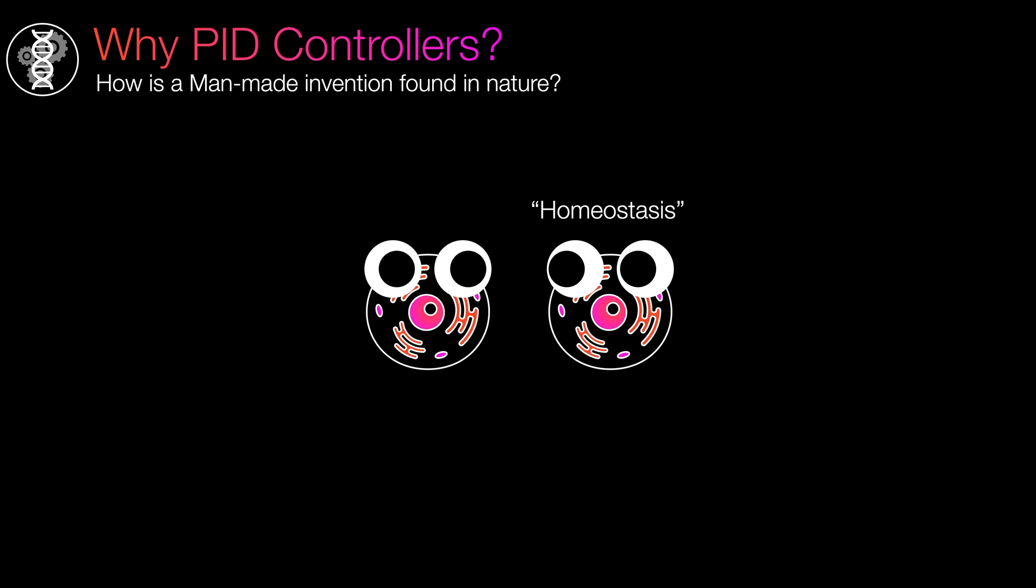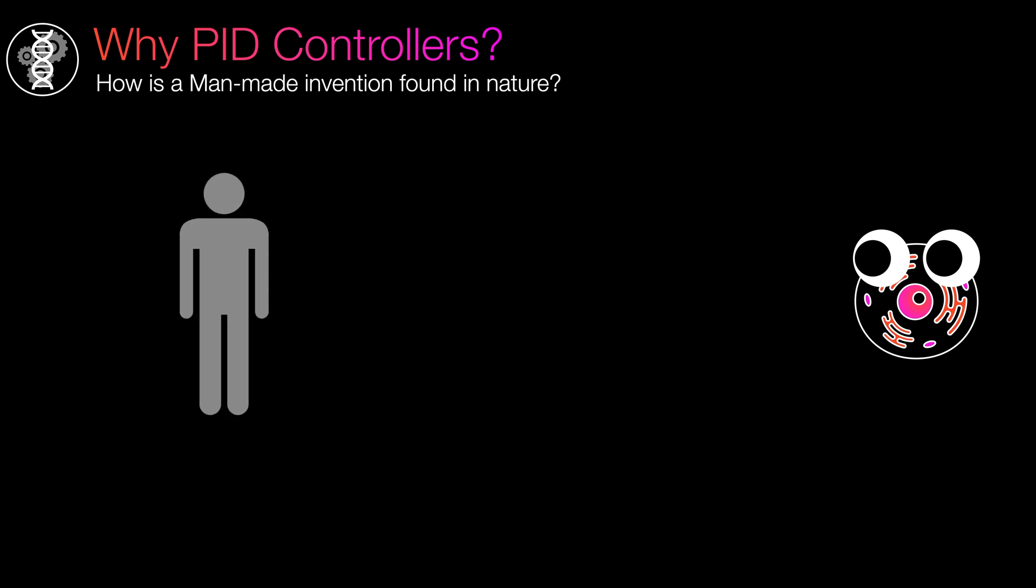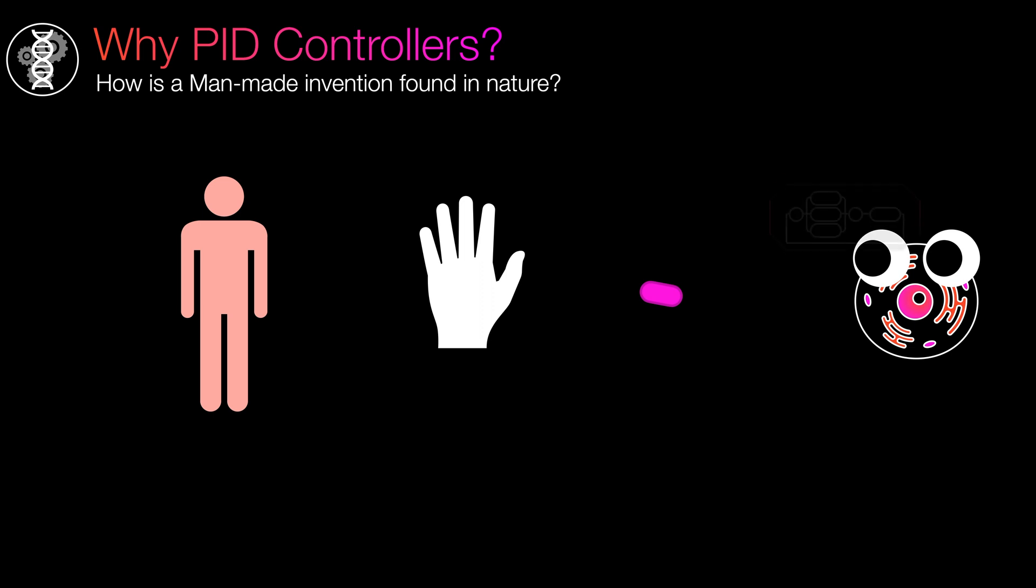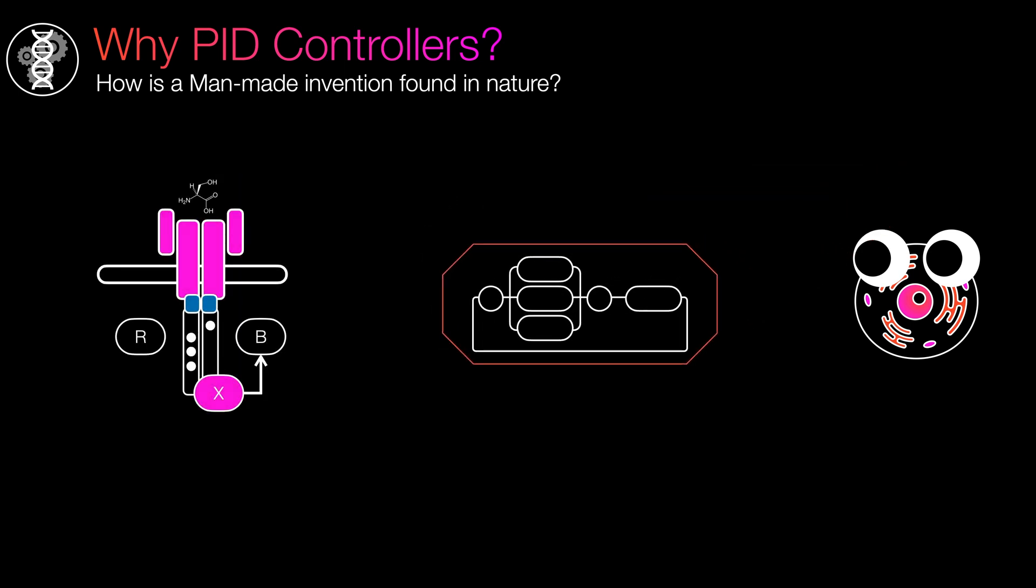Homeostasis refers to the ability of an organism to maintain stability and sustain life, whether that's regulating body temperature, moving muscles to a specific point or speed, or determining when to tumble instead of run. All of these tasks are more effectively accomplished through the involvement of a feedback control loop. It's reasonable to assume that there is an evolutionary pressure to devise mechanisms to tackle problems related to homeostasis.